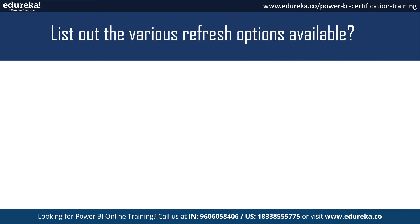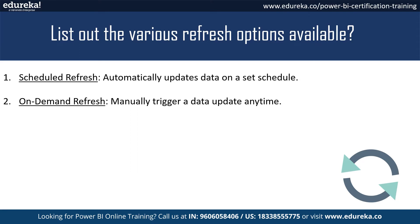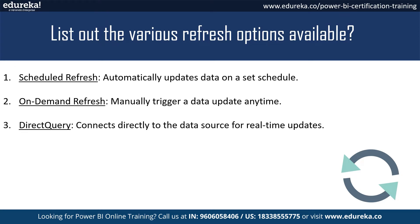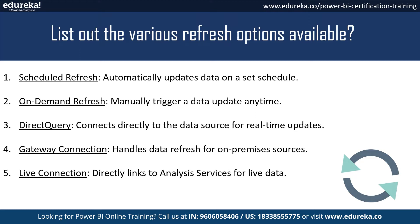Next, let's list out the various refresh options available in Power BI. First, we have scheduled refresh that automatically updates your data on a set schedule. Next, on-demand refresh is used to manually trigger a data update at any time. This is followed by direct query, which connects directly to the data source for real-time updates, and gateway connection, which handles data refresh for on-premises sources. Finally, live connection provides direct links to Analysis Services for live data.